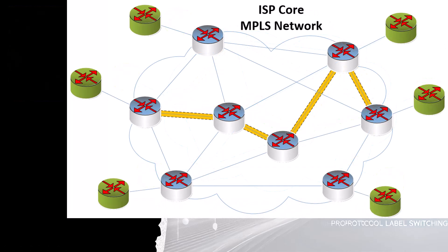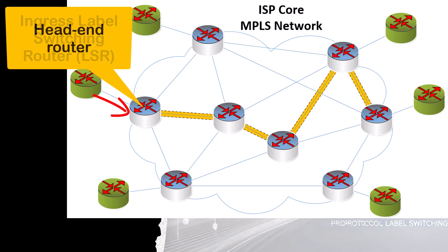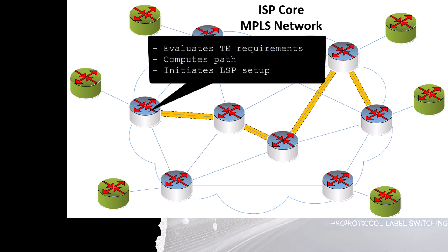Each LSP can be designed to specifically deliver what is required, thus making networks smarter and more adaptable. An LSP consists of three key components. First, we have the ingress label switching router. LSPs always start at an ingress LSR — this is the LSR that receives data to be sent, also called a head-end router. This is where the LSP begins. The ingress router evaluates the traffic engineering requirements, computes the path based on the configured criteria, and initiates the setup of the LSP.